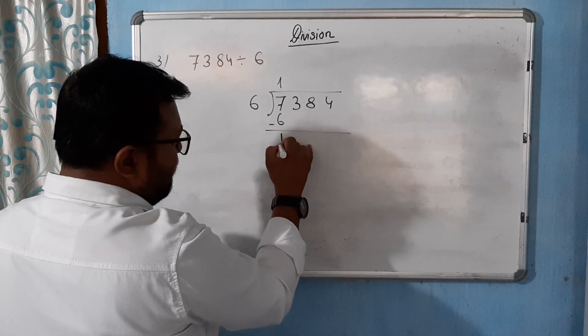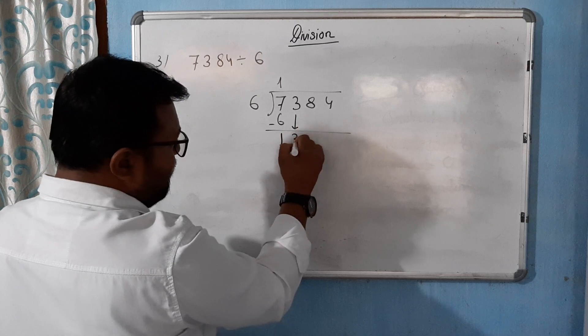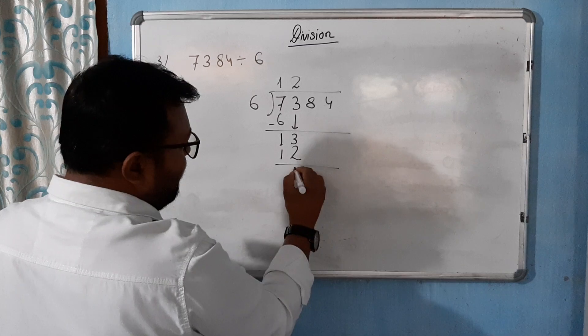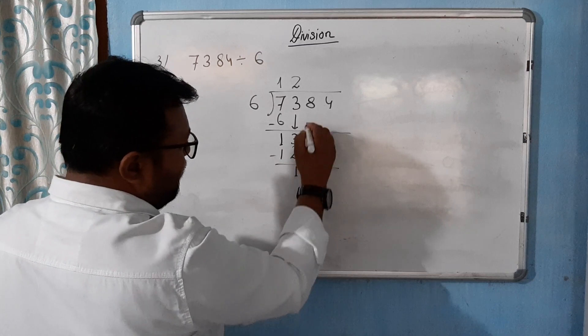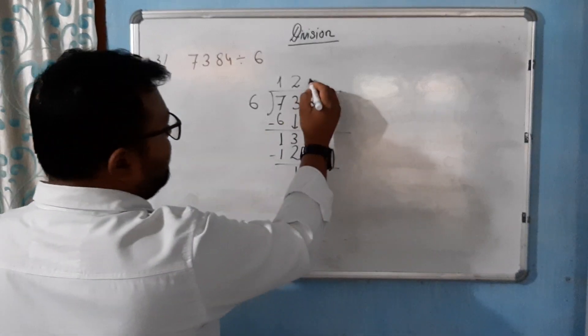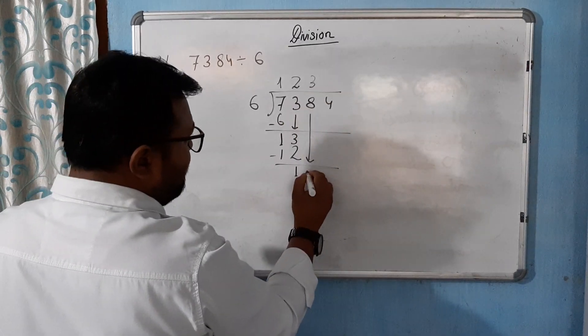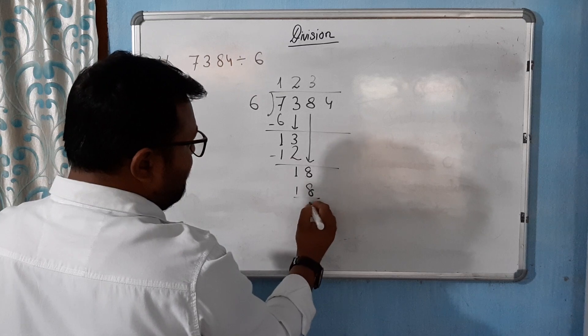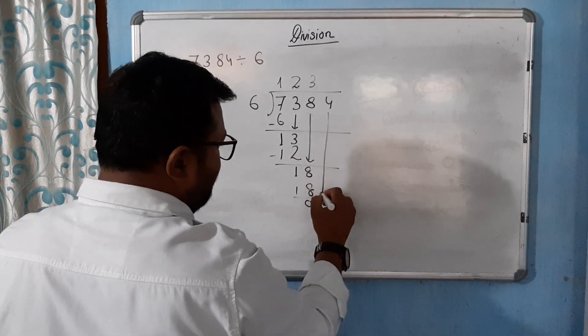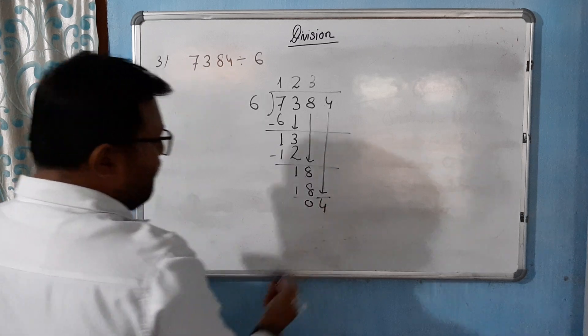7384 is divided by 6. 6 into 7, we get 1. 13 comes down, 6 into 12 is 2, 0. Eighteen, zero.